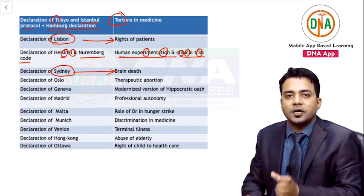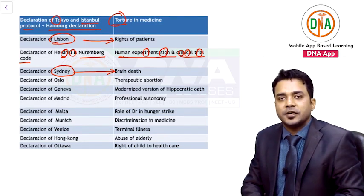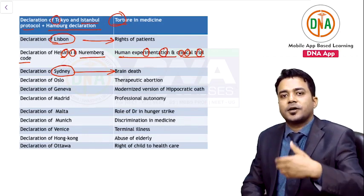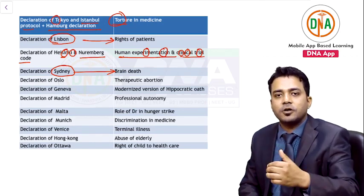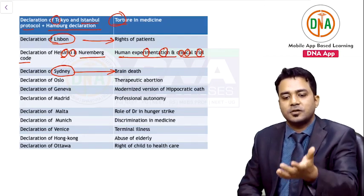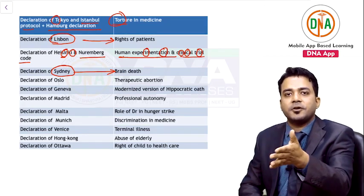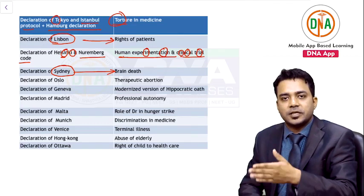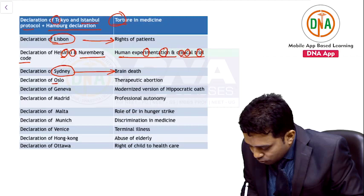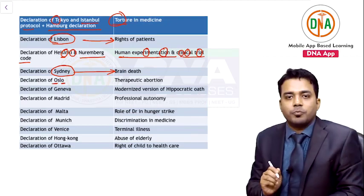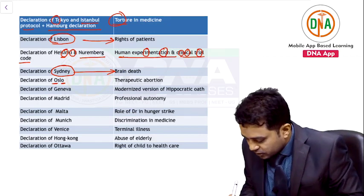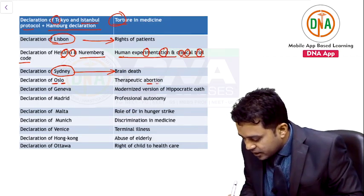The Declaration of Sydney deals with brain death. When do you say a person is brain dead? According to the Declaration of Sydney. Important criteria for brain stem death include Harvard, Philadelphia, and Minnesota criteria. In India, the Transplantation Act defines brain stem death. Declaration of Oslo — remember many letter 'O's in Oslo — deals with abortion.